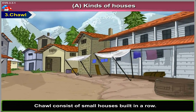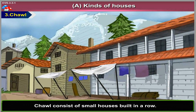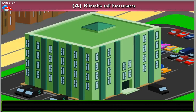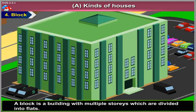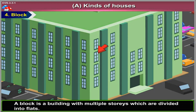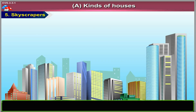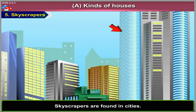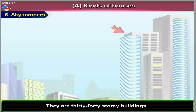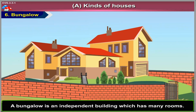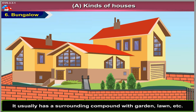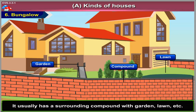A chowl consists of small houses built in a row; we find them in towns and cities. A block is a building with multiple stories which are divided into flats. Skyscrapers are found in cities and are 30 to 40 storey buildings. A bungalow is an independent building which has many rooms, and it usually has a surrounding compound with garden, lawn, etc.